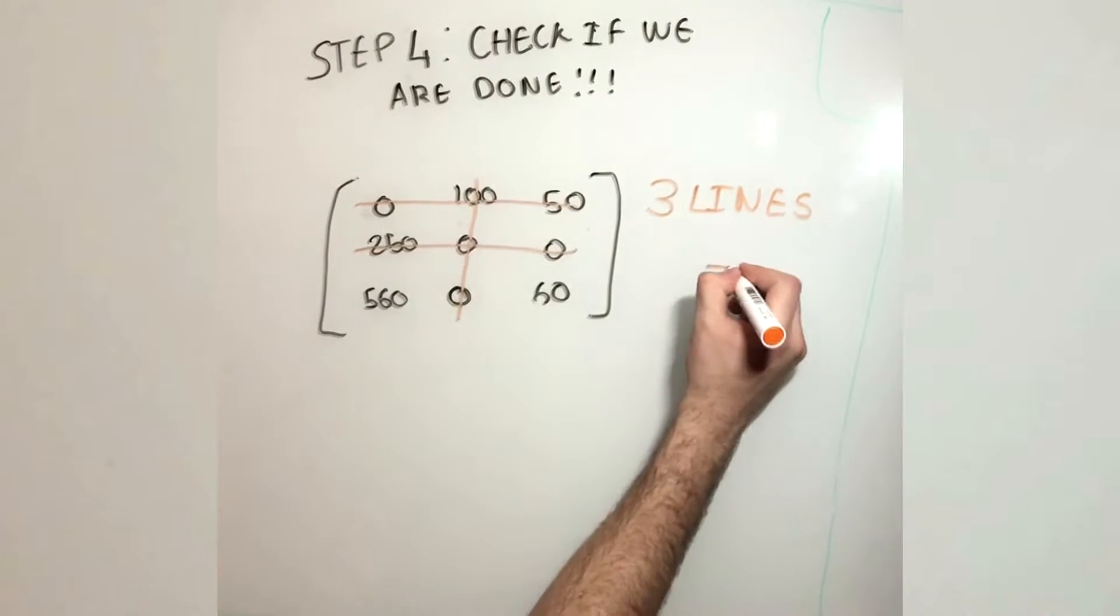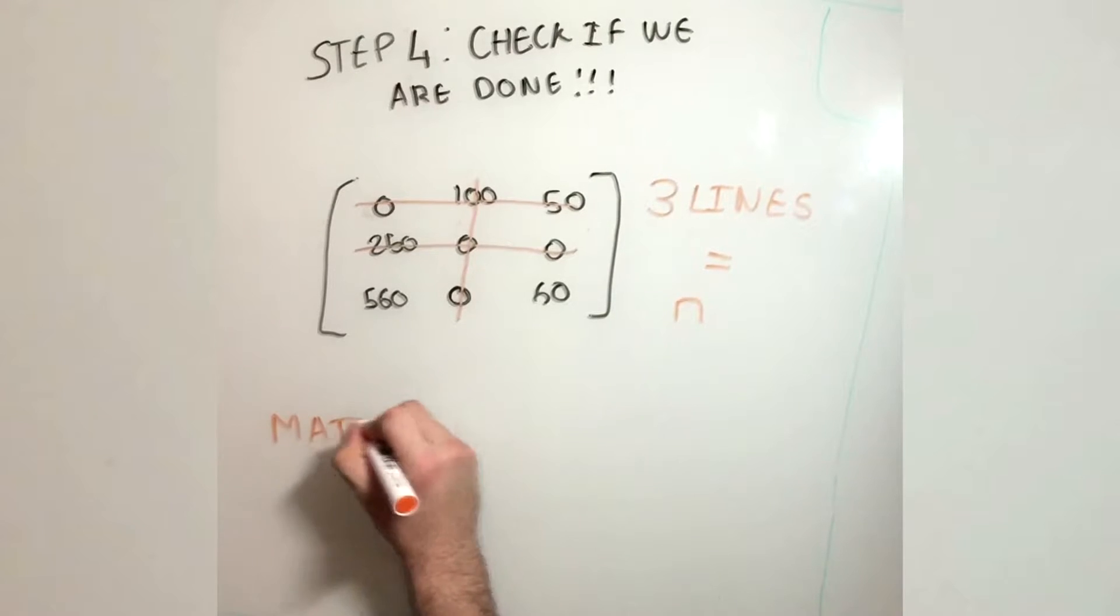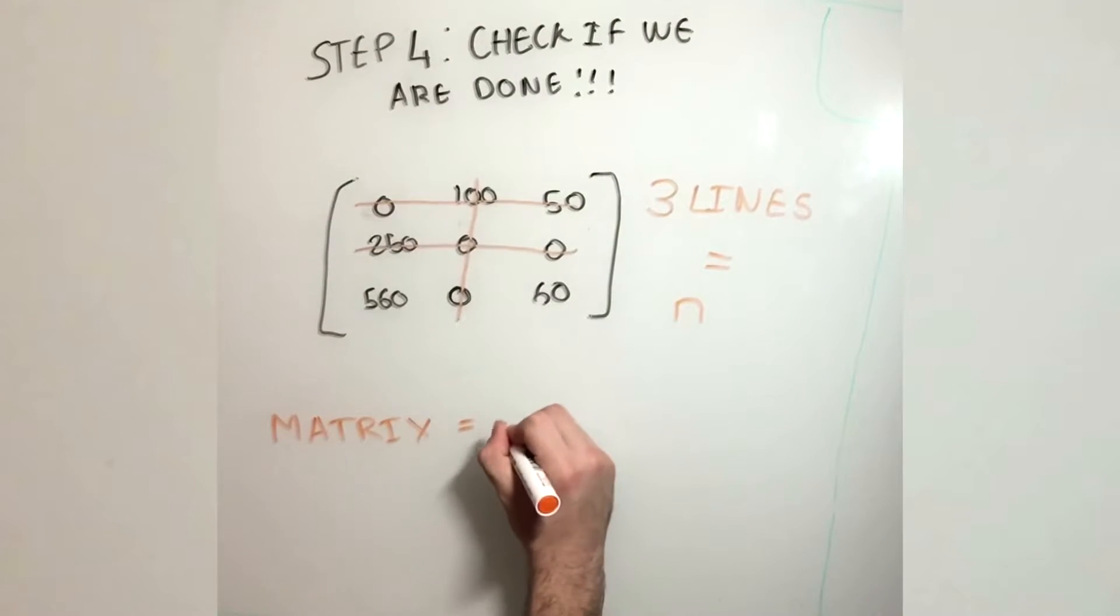In this case, we have three lines. The algorithm is only complete when the number of lines are equal to N. In this case, the number of N are the number of elves. So step 4 is complete.